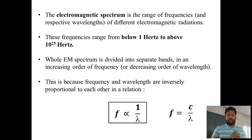Another thing is the whole spectrum is divided into separate bands in an increasing order of the frequency or decreasing order of the wavelength. Now this increase and decrease shows the inverse relationship between the frequency and the wavelength which is given by F is proportional to 1 over lambda or F is equal to C by lambda.